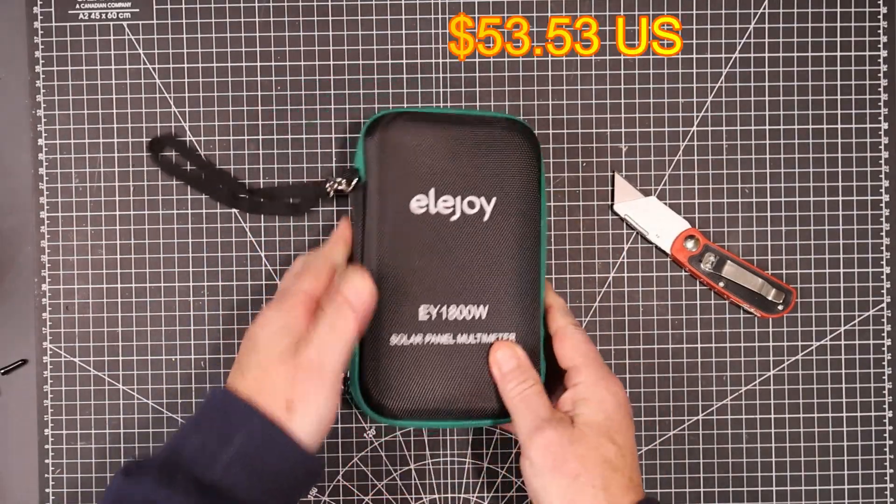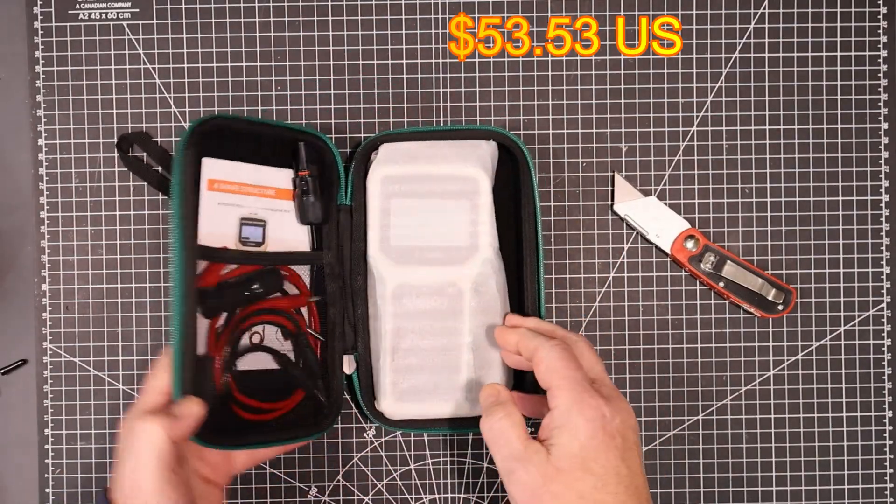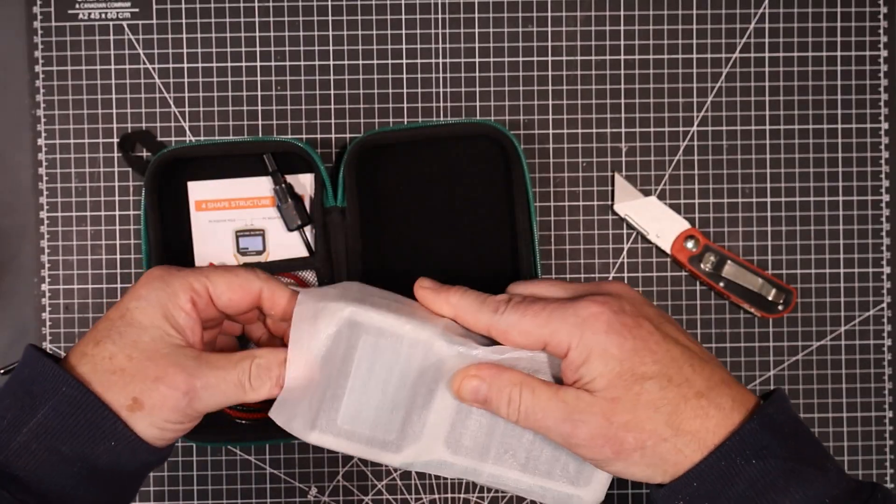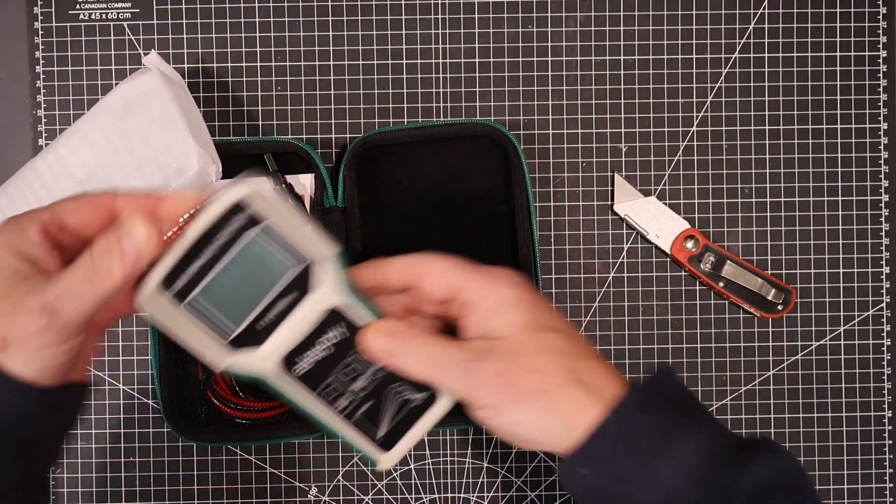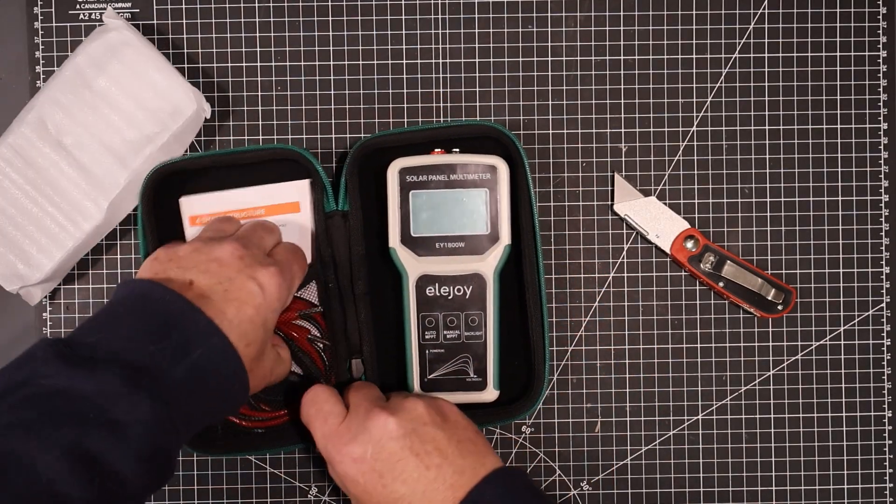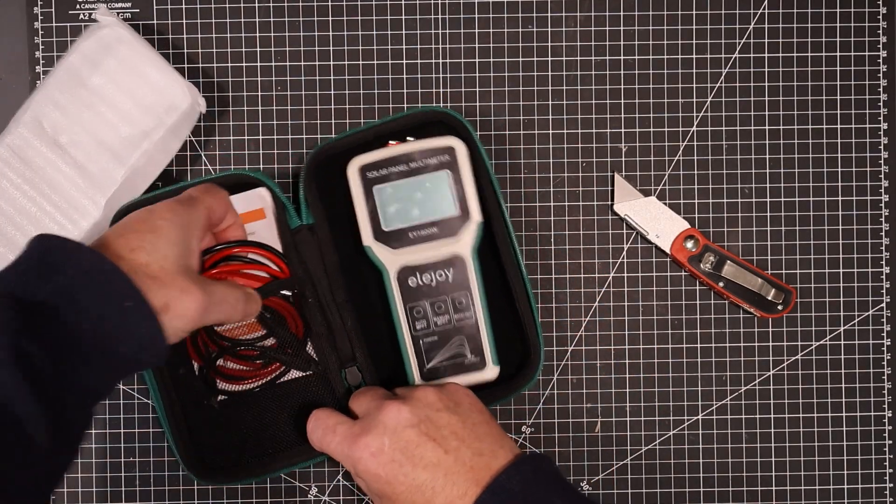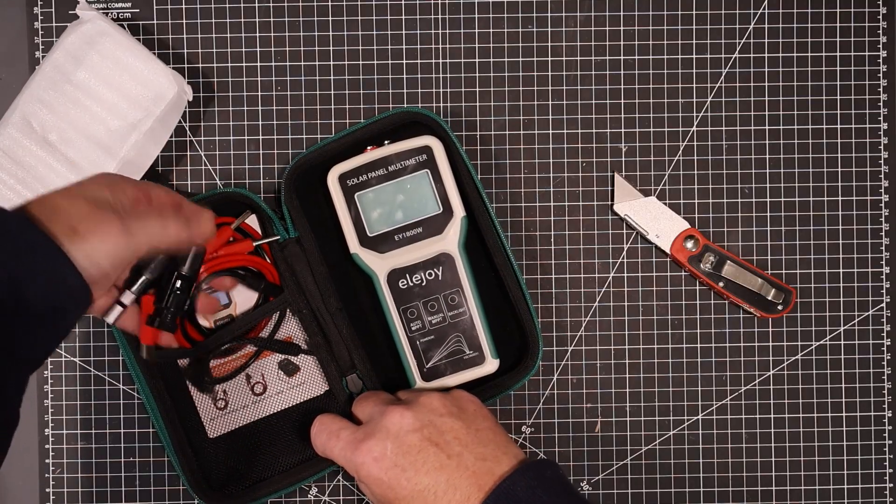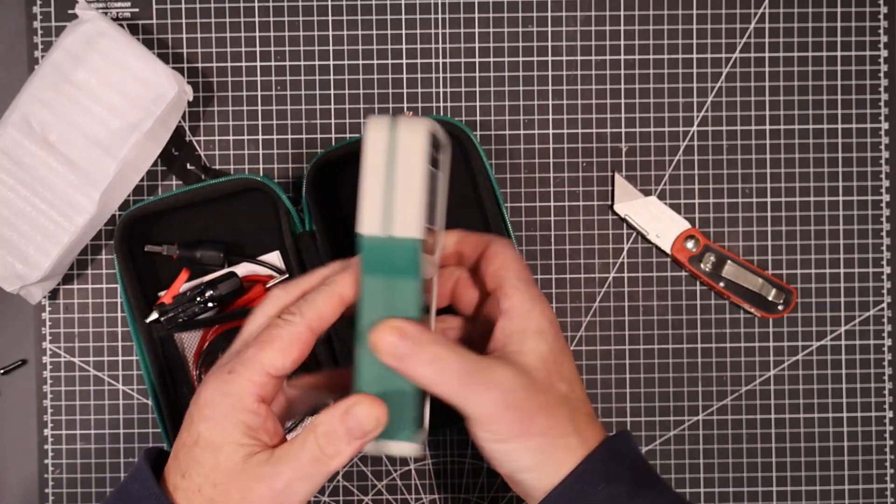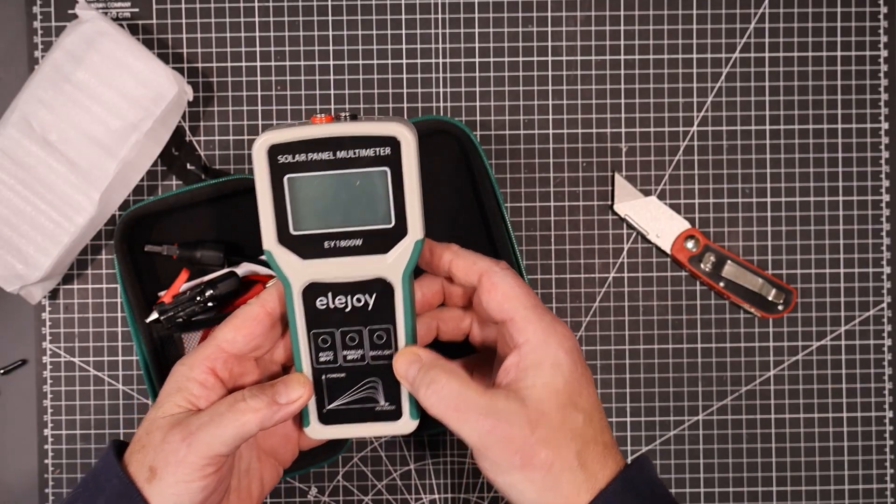This here is a solar panel multimeter. So this tests out your solar panels to see if they actually meet their specifications. So again, this is something else I'm going to have to do a test on. So it comes with various leads here. You can plug in your solar panels into here, and it'll test them.